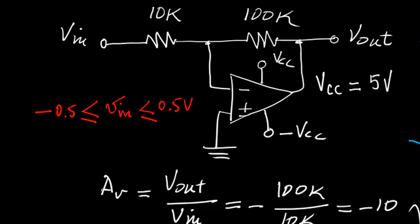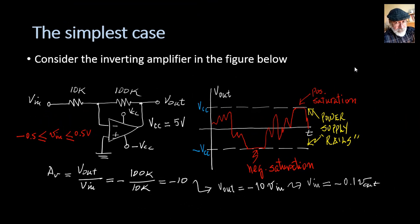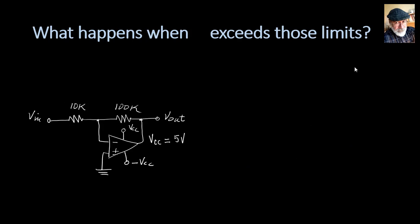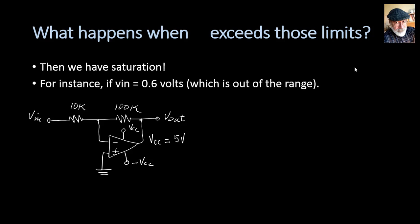And there is a range of the input voltage that will not saturate the amplifier. Vin must stay within the negative 0.5 and positive 0.5 volts range. But the question is, what happens if the input exceeds that range? Let's say, what if the input voltage is, let's say, 0.6 volts?